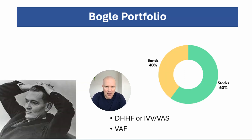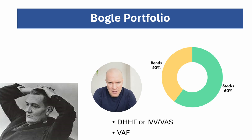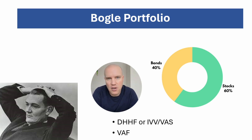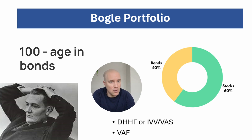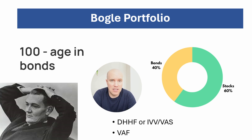John Bogle, the original index fund trailblazer, started Vanguard and created index funds to combat the high fees of mutual funds. He has a really simplified portfolio similar to Warren Buffett's but with a strategic lens. He suggests going into three asset classes: local stocks, overseas stocks, and bonds. His recommendation was to set your age as your bond percentage — so the percentage in stocks would be 100 minus your age. As a 40-year-old, you'd have 40% in bonds and 60% in stocks; as a 20-year-old, 20% in bonds and 80% in stocks. You can recreate this through either a three-fund or two-fund portfolio depending on how much emphasis you want to place on local versus overseas stock markets.